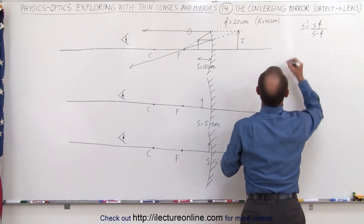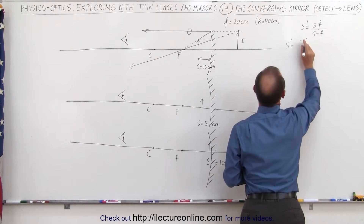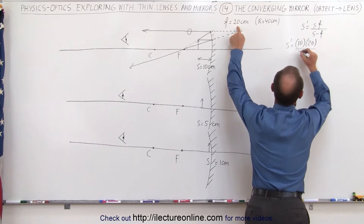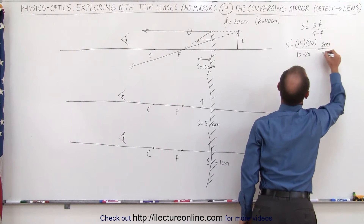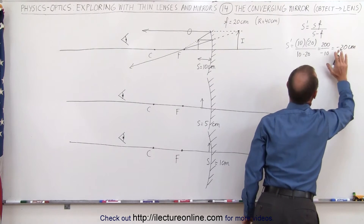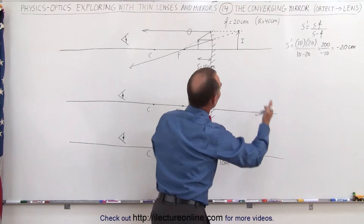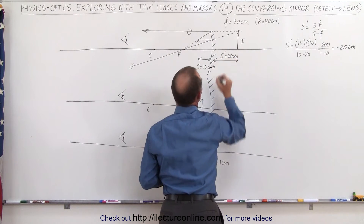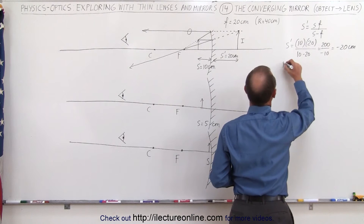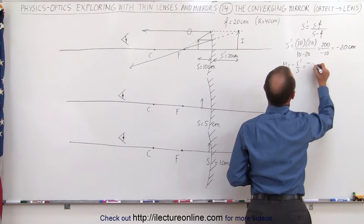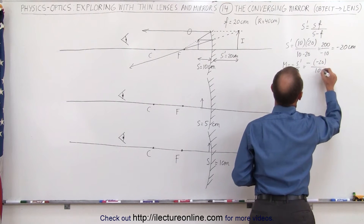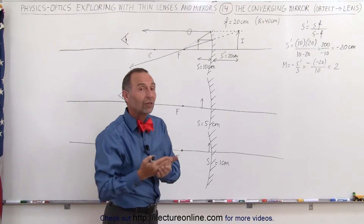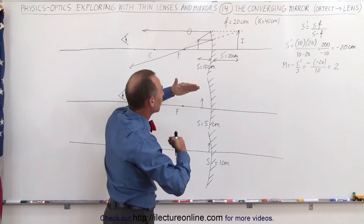Using the mirror equation: s prime equals s·f over (s minus f). With s = 10 cm and f = 20 cm, we get 200 divided by (10 minus 20), which is 200 divided by minus 10, giving minus 20 centimeters. The negative sign means it's a virtual image behind the mirror, at a distance of 20 centimeters. For magnification: m equals minus s prime over s, which is minus(−20) divided by 10, giving a positive 2. A positive 2 means the image is upright and twice as large as the original object.